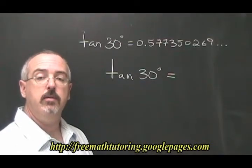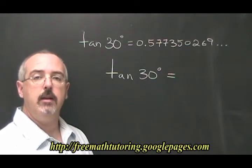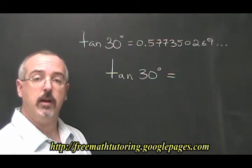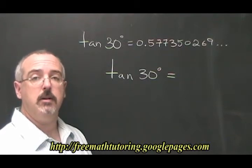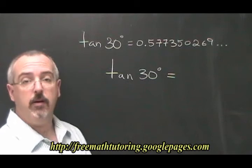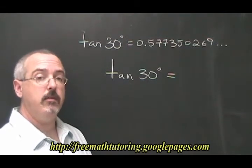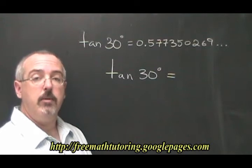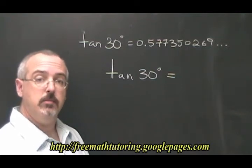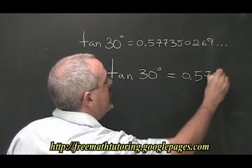Remember, in trigonometry we always round off to four decimal places. If we enter TAN of 30 degrees into our calculator, we get a long decimal that starts with 0.57735. Since the fifth number is a five, and that's greater than four, we will round the fourth number up by one. So our answer will be 0.5774.